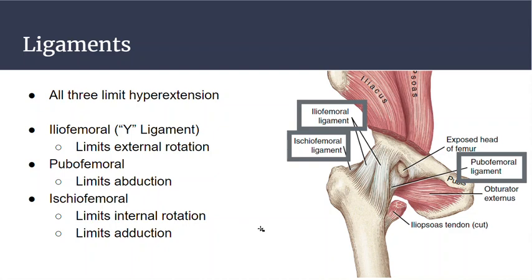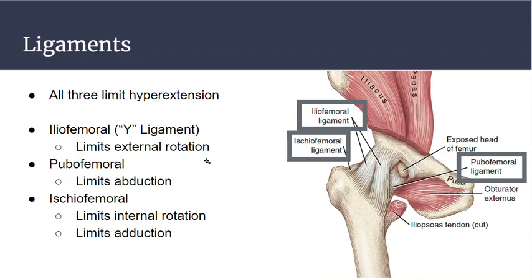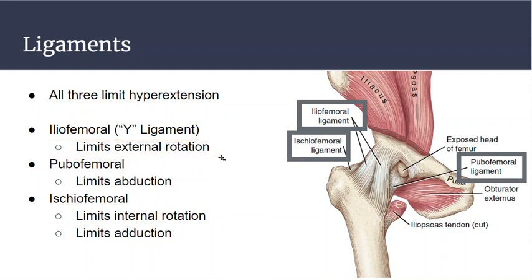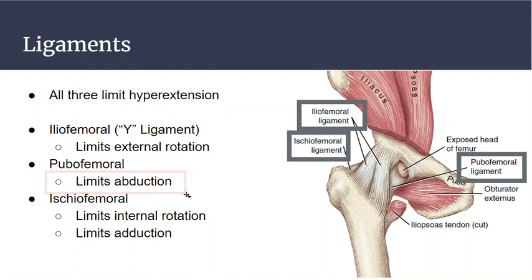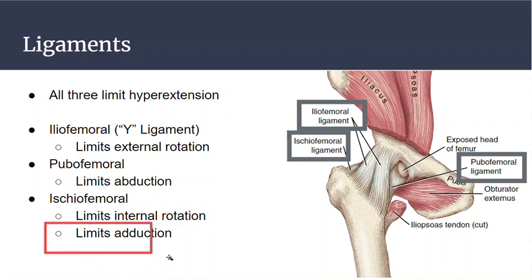Ligaments limit motion, so it's important to know what motion each ligament limits. All three limit hyperextension or excessive extension. The iliofemoral ligament limits external rotation — rotating your toes out to the lateral side. The pubofemoral ligament limits abduction, which is moving your lower limb away from the body; it's on the medial side and resists that movement. The ischiofemoral ligament limits internal rotation — rotating your toes toward the midline — and also limits adduction, moving the whole limb toward the midline.